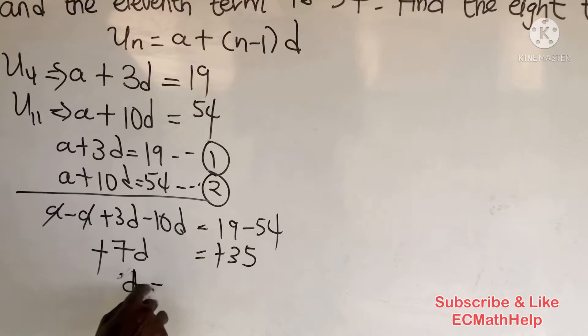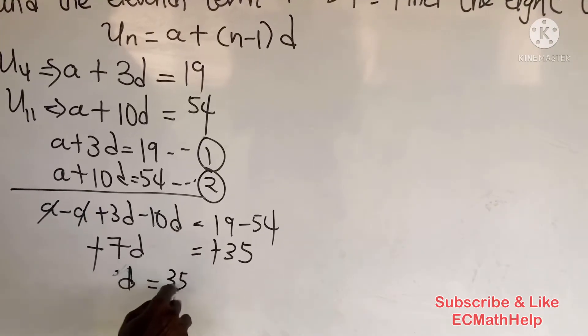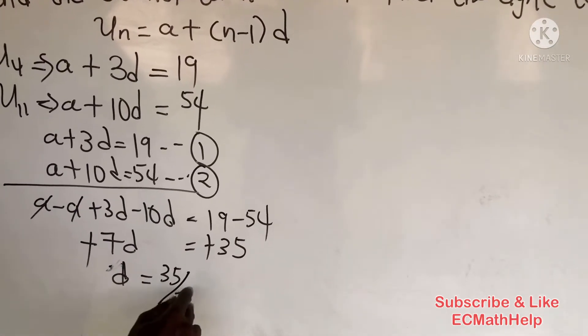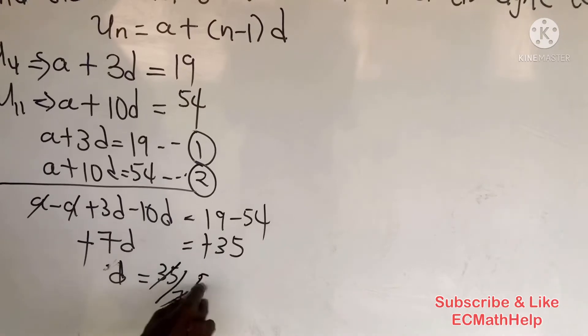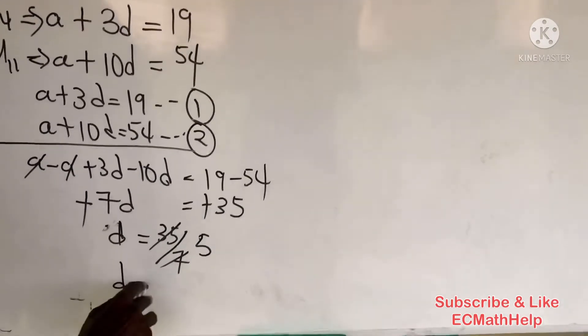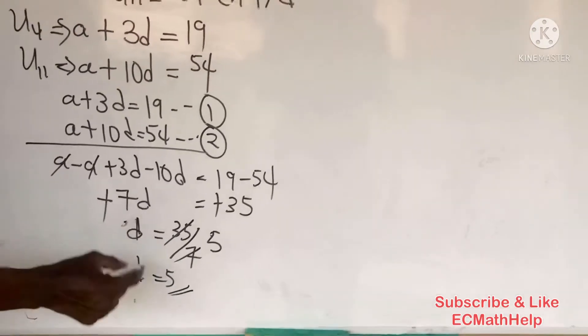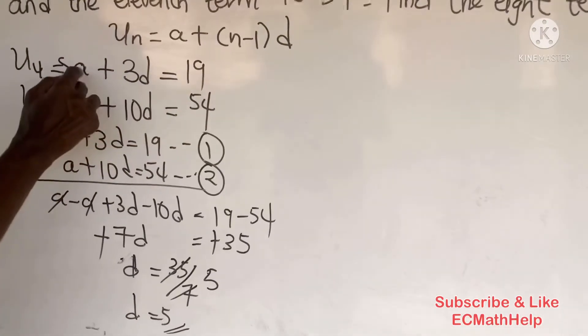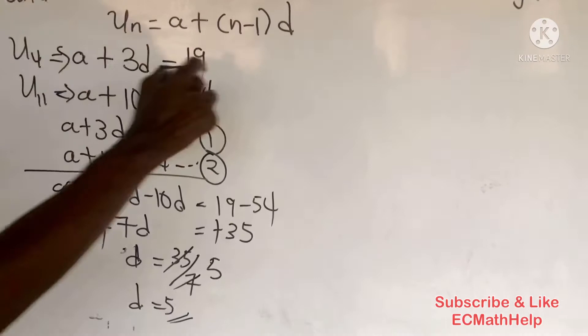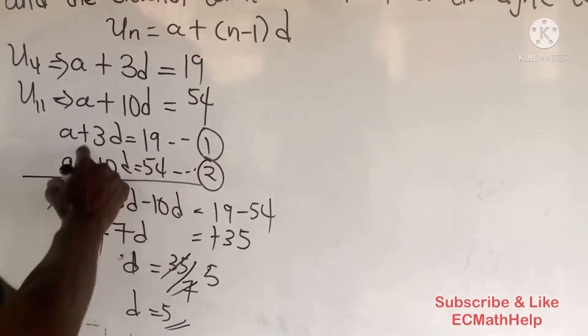So d equals 35 over 7, which equals 5. Now we have the common difference. Next, we need to find the first term, so let's pick one of